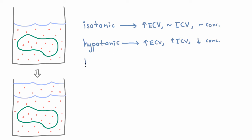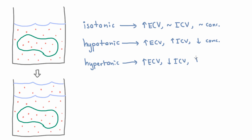The third example is adding hypertonic fluid. Hypertonic fluid has a higher concentration of salt than your extracellular fluid, and this is pretty much the same as just adding salt — adding salt is like the most extreme example of this. When you add hypertonic fluid, you get an increase in extracellular volume, a decrease in intracellular volume, and an increase in the concentration of both compartments.